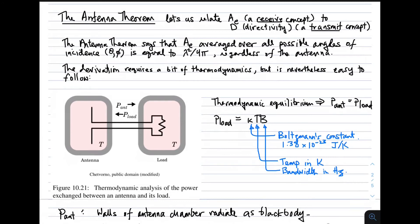Next, we discuss the antenna theorem, which relates effective aperture — a receive concept — to directivity, which is a transmit concept. Some people refer to this relationship as reciprocity, but that is not quite the whole story. The antenna theorem provides the connection between these two quantities.